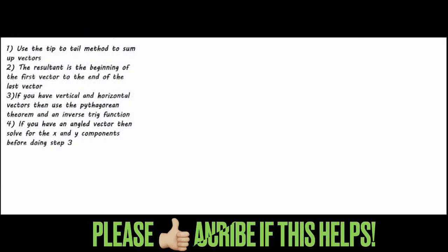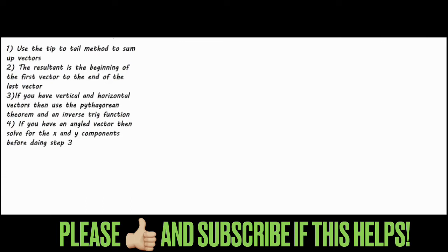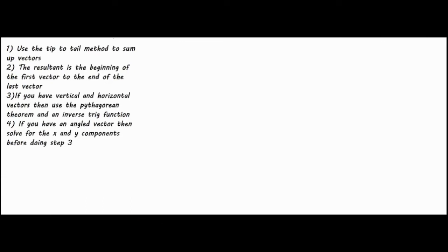In this video I'm going to be talking about how to solve any type of vector problem using a few different strategies. Let's start off with number one: using the tip-to-tail method to sum up vectors. If you have a pretty simple vector problem that just has vectors along the horizontal direction or the vertical direction, you can simply use this method with some addition or subtraction.